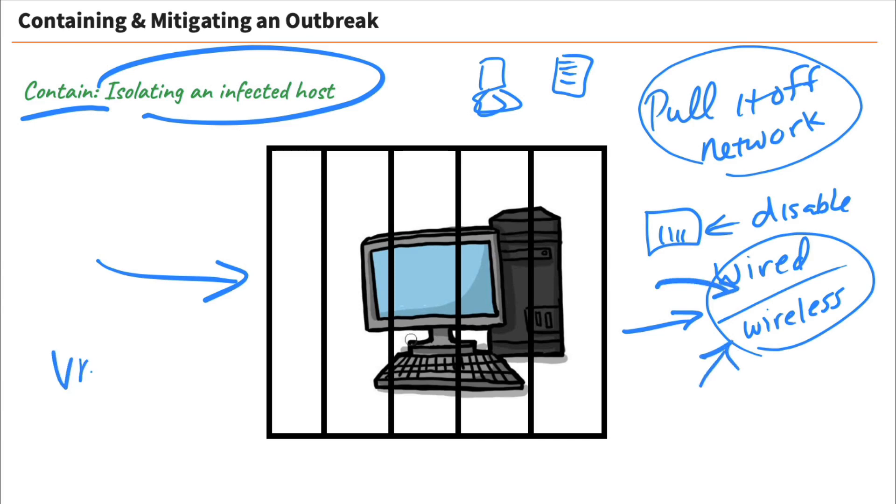But what if I'm running in a virtualized environment? I've got VMs and one of the VMs is infected. Well, you can disable the network adapter from within the VM itself, just like we do in a physical host, and then you can use a virtual console to actually gain access into that host and manage it and work with it to figure out what's going on on that host. So that is how we contain or isolate infected hosts.